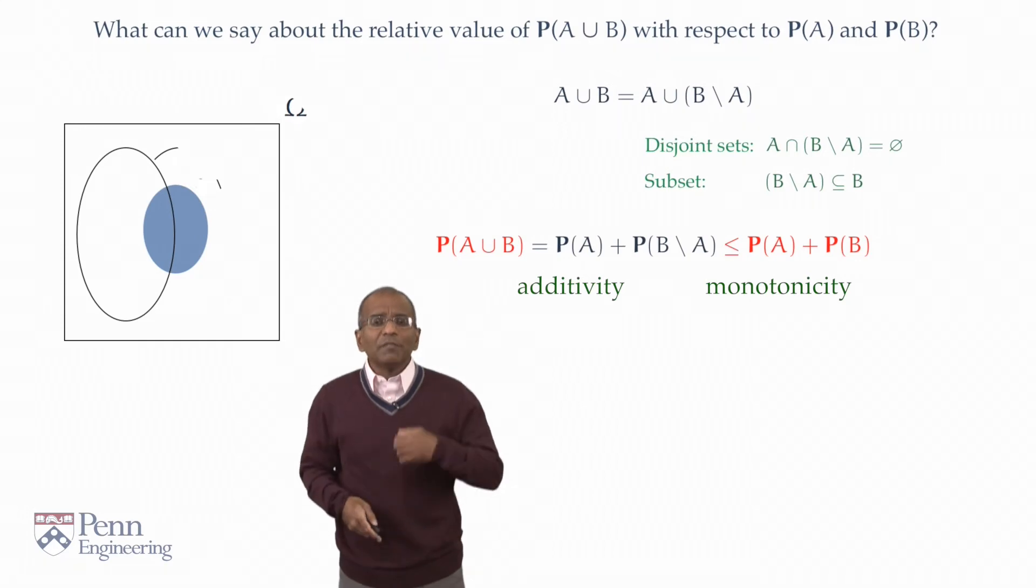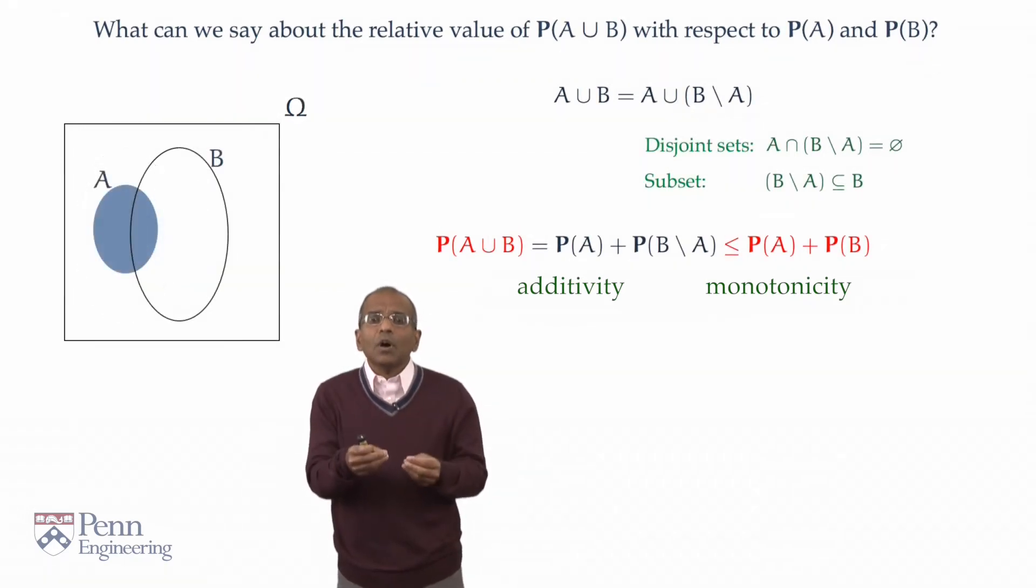The probability of A union B is no larger than the sum of the probabilities of A and B. Only experience will teach a student that simple inequalities like these are more than worth the price of admission. These are much more useful, typically, than ponderous and condition-bound inequalities which require pages of work to elucidate.